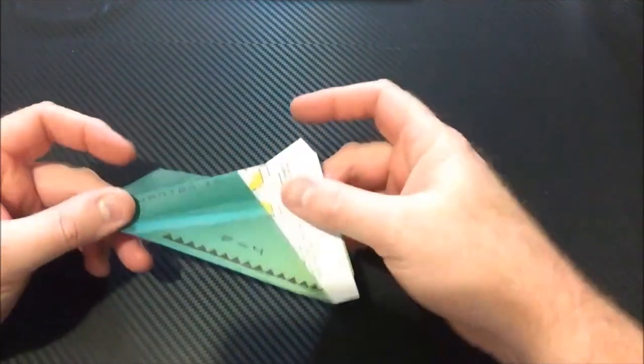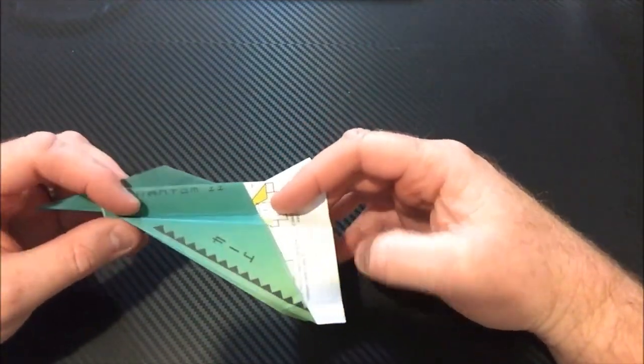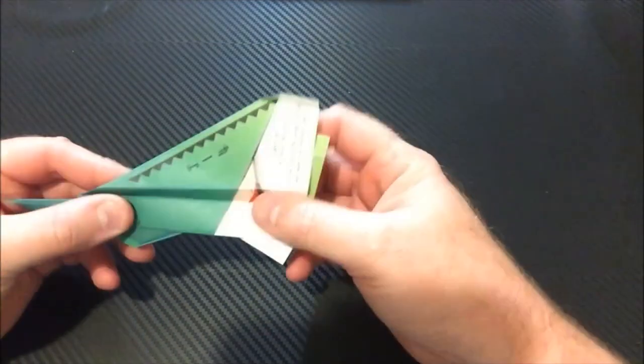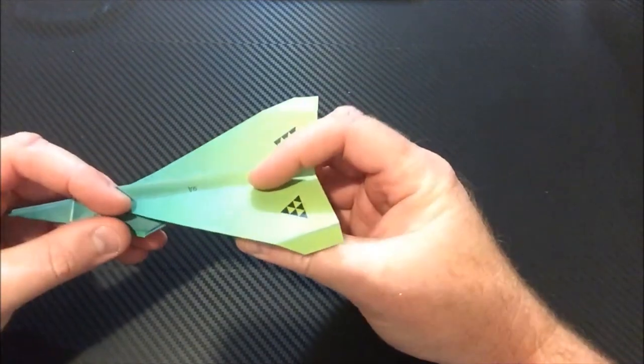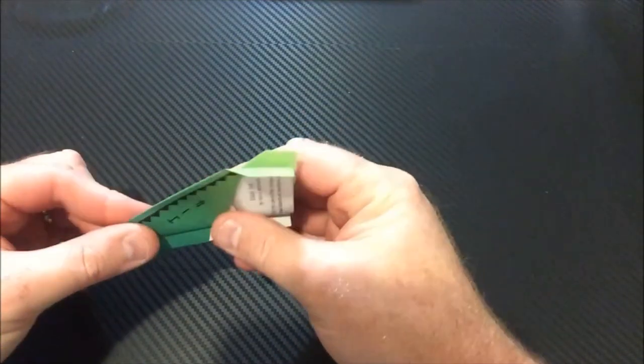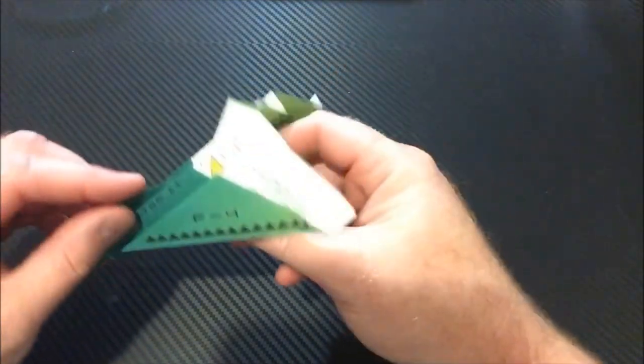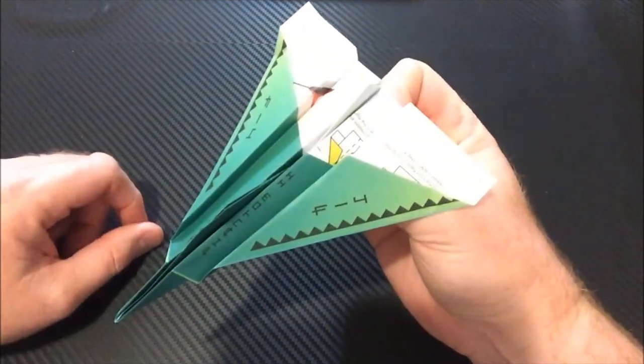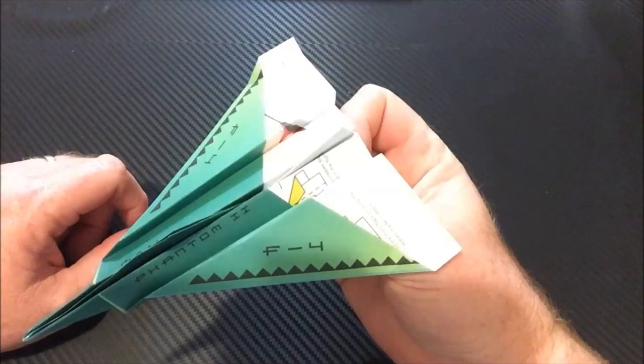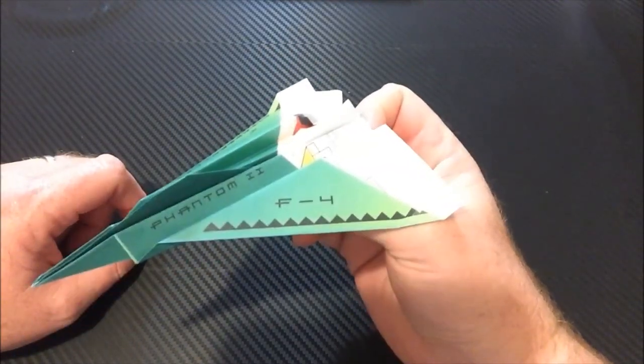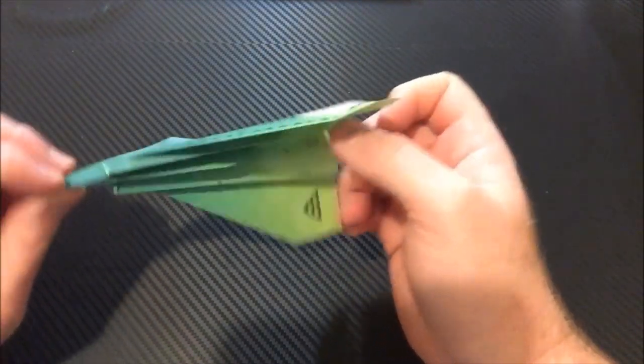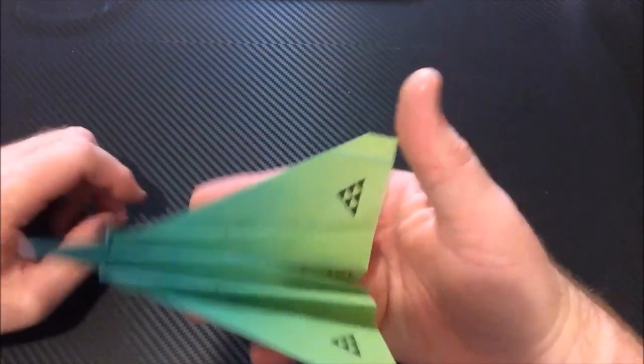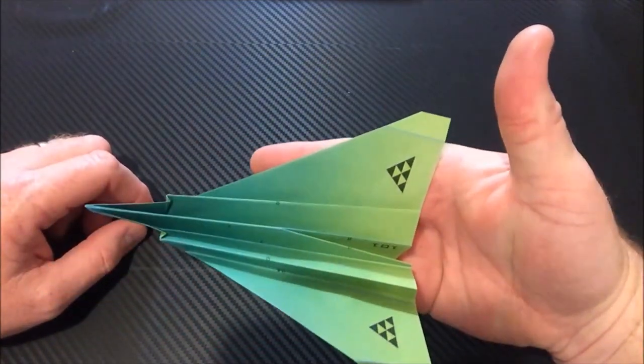Once the plane's at this stage, then you can fold up and down on the wing. And that creates that look. It's an awesome looking plane. It's just really challenging to fold without having the pre-printed piece of paper.